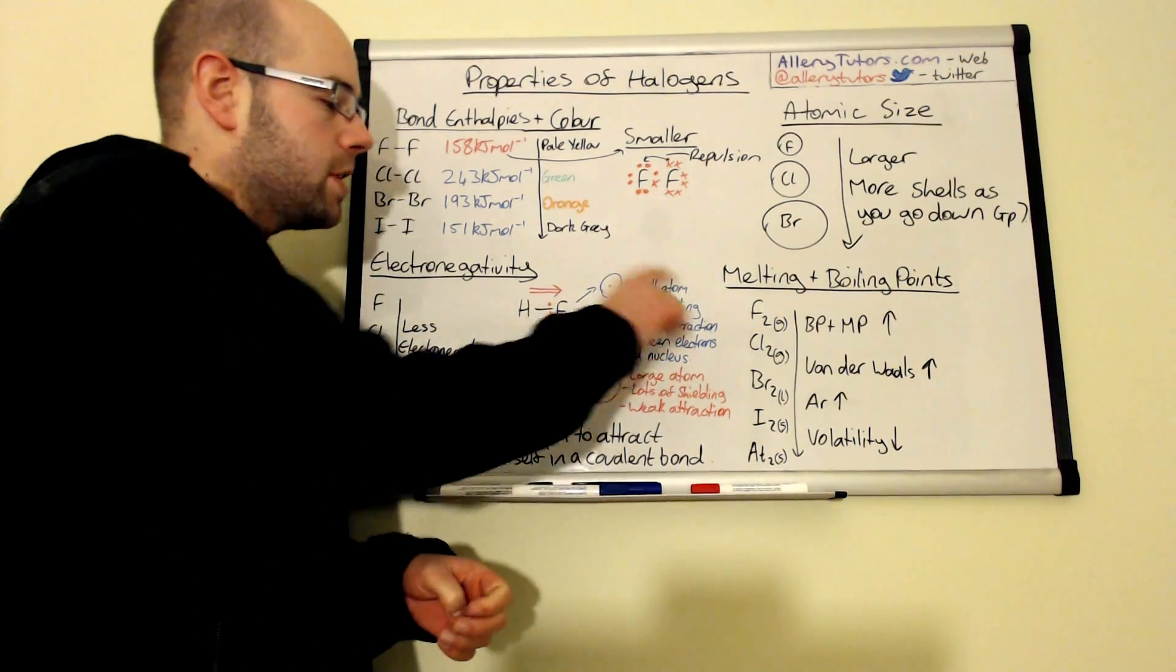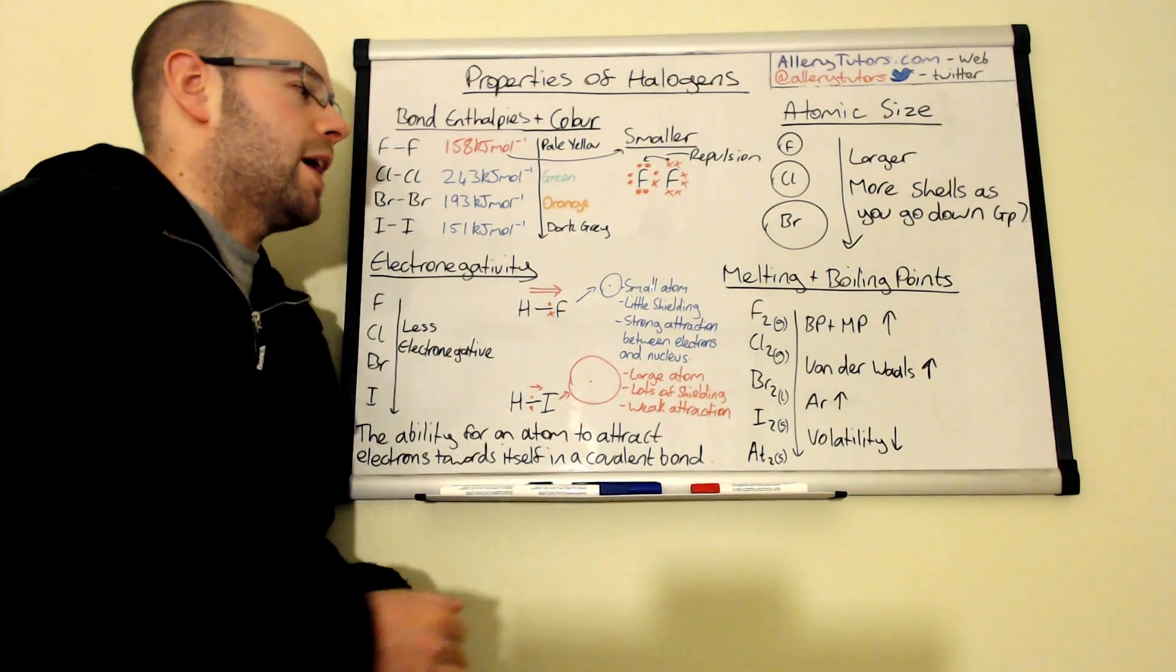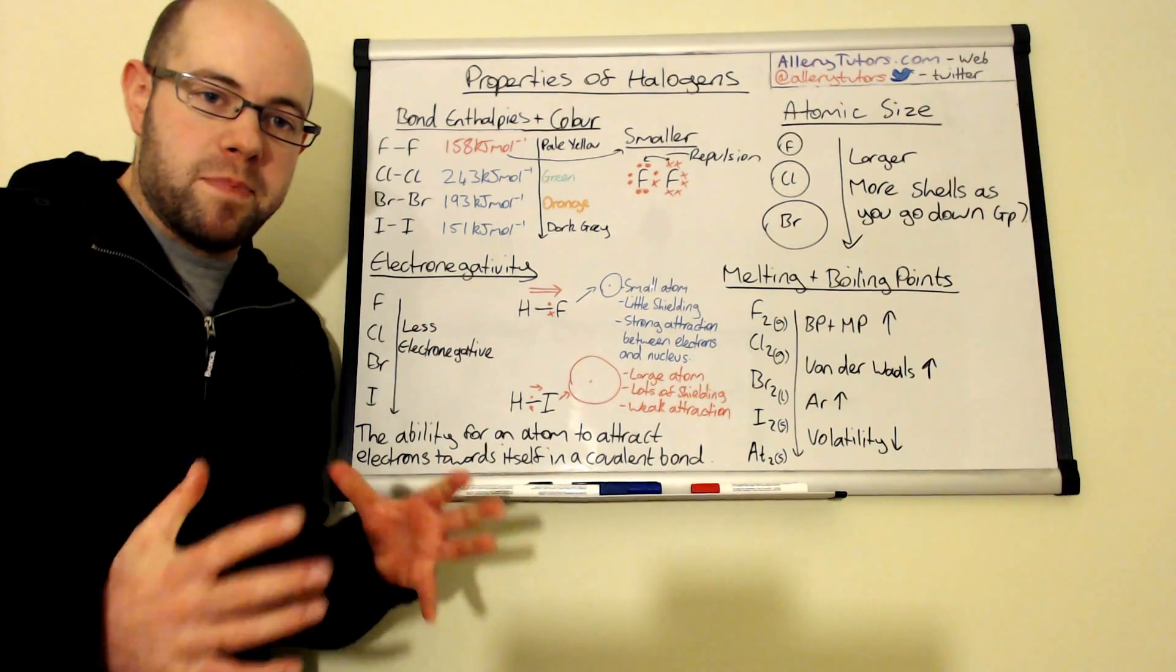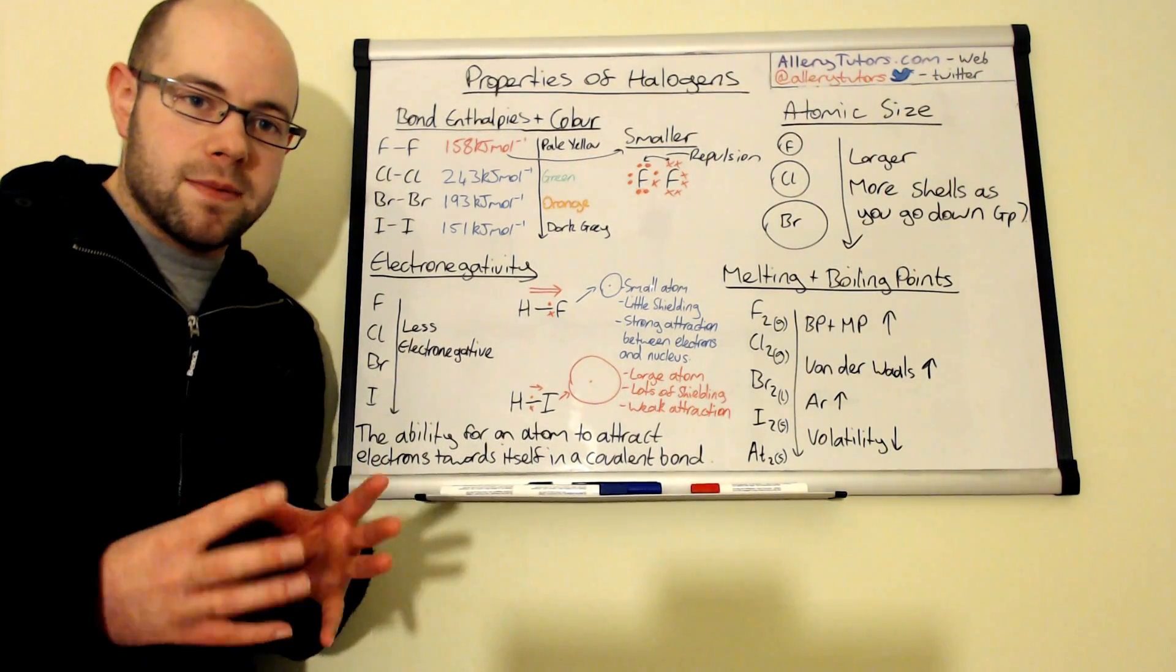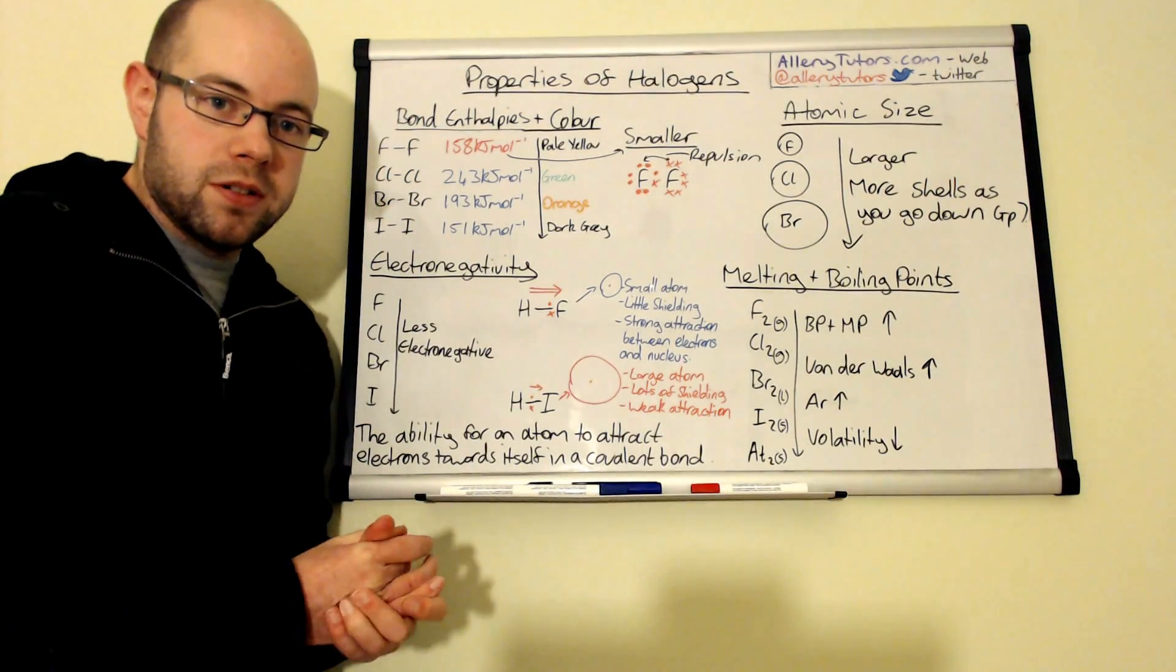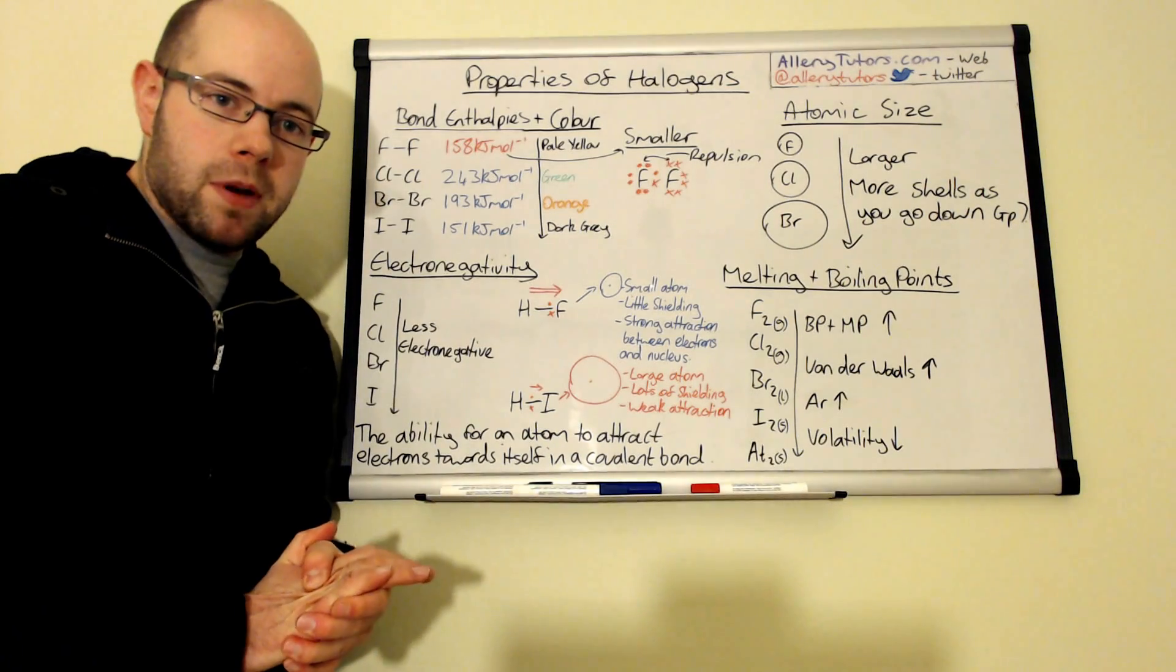Okay now just coming on to the last thing which is melting boiling points. Now as we go down the group the melting and boiling point of halogens get bigger and the thing which governs melting and boiling points are intermolecular forces in terms of simple covalent molecules like this.